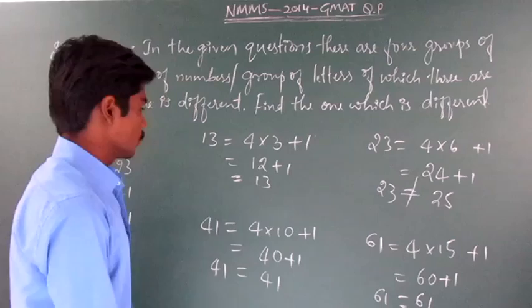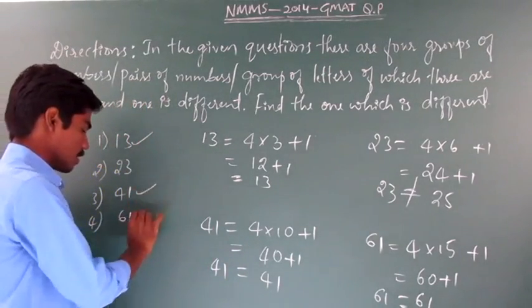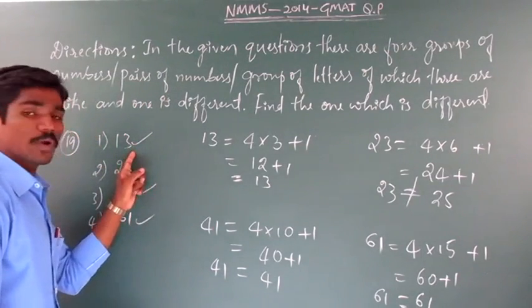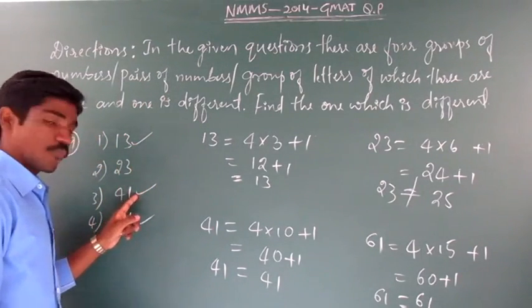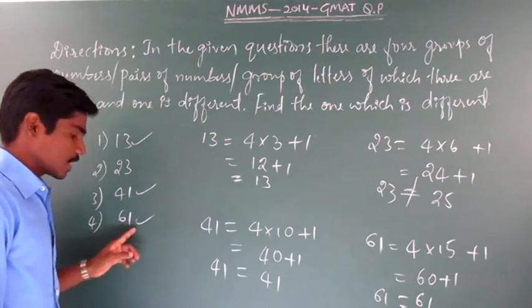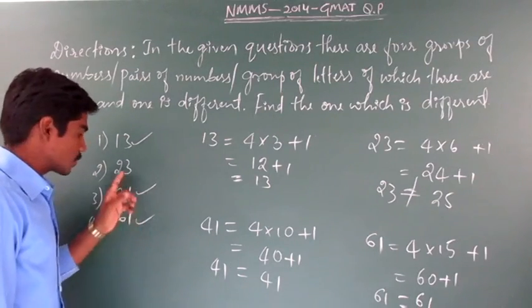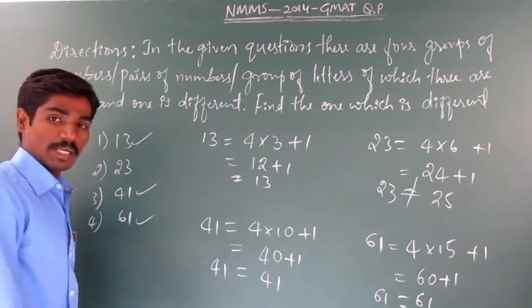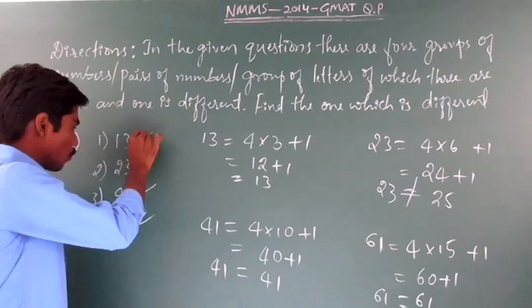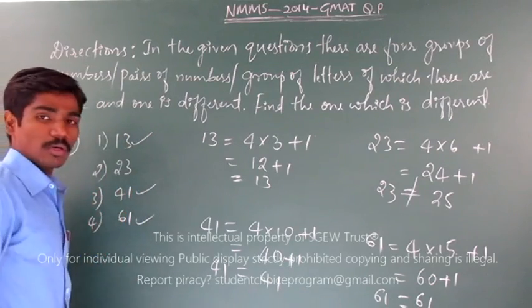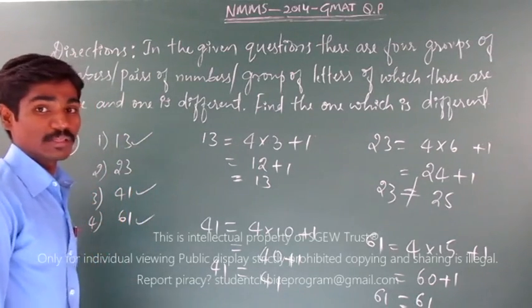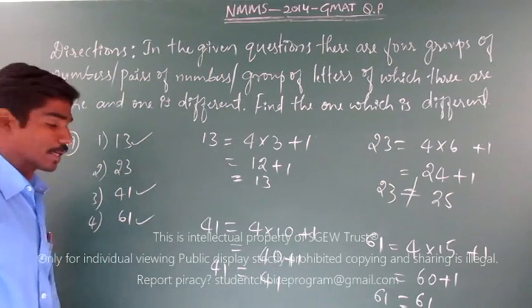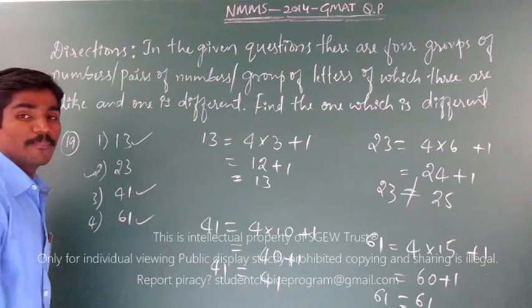These three numbers satisfy the relation, that is multiple of 4 plus 1. Here it is 4 into 3 plus 1, here it is 4 into 10 plus 1, here it is 4 into 15 plus 1. But 23, I will not get this as a multiple of 4 plus 1. So options 1, 3, and 4 are alike, but option 2 is different. Therefore option 2 will be the right option.